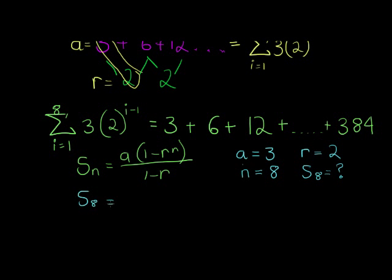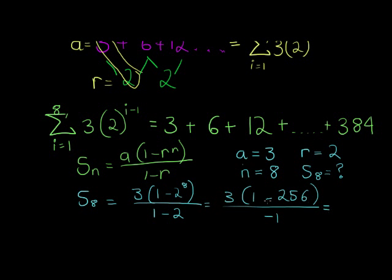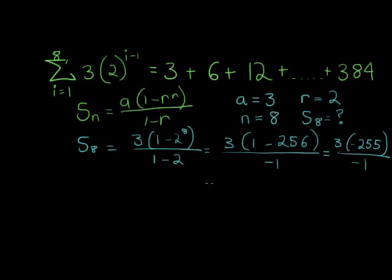So s_8 will be when I replace all of this with 3, 1 minus 2 to the power of 8 divided by 1 minus 2. That gives me 3 times 1 minus 2 to the power of 8 is 256, divided by negative 1. And what answer do we get? 1 minus 256 is negative 255, so 3 times negative 255 divided by negative 1, and that will give me 3 times 255, which is 765.